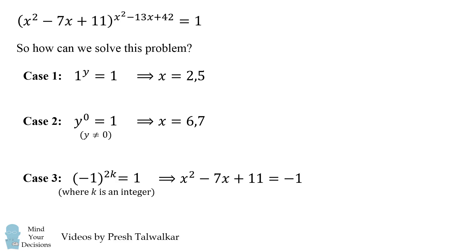So we set the base x^2 - 7x + 11 = -1. We then solve this equation by factoring and we get two solutions of x = 3 and x = 4. And I should say there are two possible solutions because we then need to check that the exponent is even.